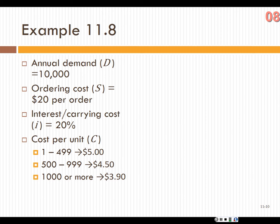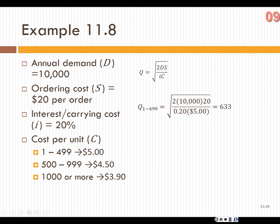The question is: what order quantity should we use? We calculate EOQ at each price point. Running the EOQ formula at $5 per unit: EOQ = sqrt(2 × 10,000 × $20 / (20% × $5)) = 633. Is that feasible for the 1–499 range? It's not — I can only get the $5 price for up to 499 units. Since my EOQ of 633 would actually fall in a lower price tier, there's no reason to order at the $5 price.